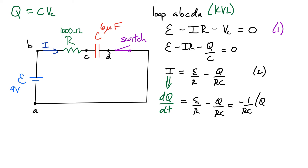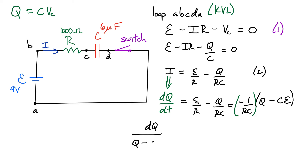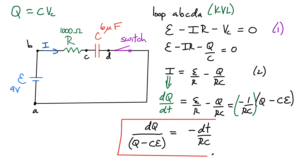Now I'll do a little bit of trickery. I'm going to rewrite this term by factoring out 1/(RC) so that the charge Q is by itself — this makes the integration cleaner. Factoring out 1/(RC), the second term requires C multiplied by the EMF, giving dQ/dt = (1/RC)[C·EMF minus Q]. You can verify that multiplying through gives back equation two. This is a really critical step. Next, bring all terms with charge to one side and everything else to the other: dQ/(C·EMF − Q) = −dt/(RC). If you can get up to this equation, you've pretty much done all the work.